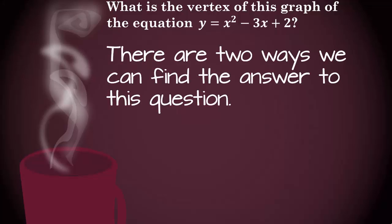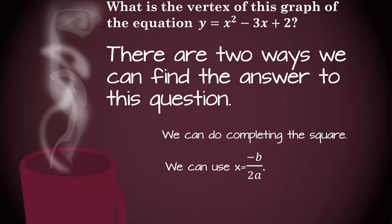There are actually two ways we can find the answer to this question. The first is by completing the square, and the second is when we use x equals negative b over 2a, and then substitute it back to find y. So I'm going to show you both.